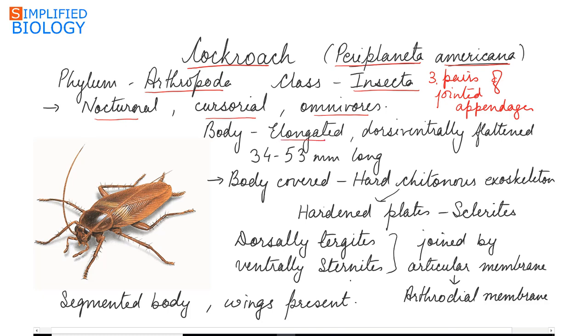The body is elongated, dorsiventrally flattened, meaning the dorsal and the ventral surface can be differentiated, approximately 34 to 53 millimeters long with the female slightly smaller than the males. The body is covered by a hard chitinous exoskeleton.